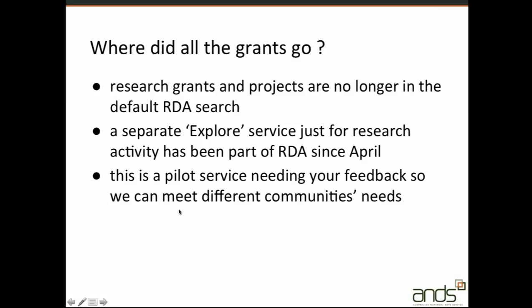Before release 15 of Research Data Australia, which went live last April, the default search would return research activities, services, parties, as well as research data collections. There were already more than 40,000 ARC and NHMRC grants in the RDA system, so grants would often appear in search results. But now that the default search for RDA only returns data collections, we needed a separate discovery service for exploring research grants and projects.